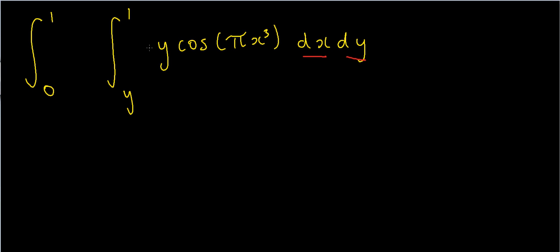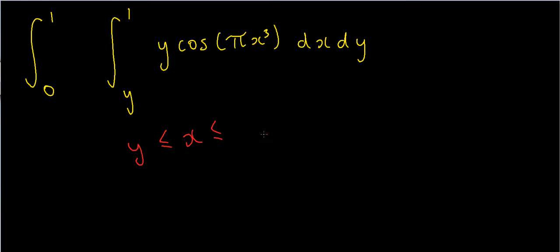So if I plot these as inequalities, what does that tell us? Well, that means I've got to do all the points such that x has got to start from y — that's the lowest possible value of x — and it's got to end at 1, that's the largest possible value of x.